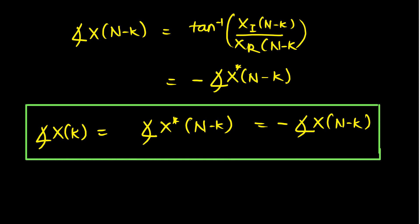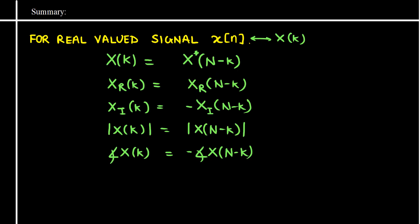So in this lecture we considered properties of the DFT for a real signal. We saw that X(k) equals X*((N-k)), the real part X_r(k) equals X_r((N-k)), the imaginary part X_i(k) equals minus X_i((N-k)), the magnitude of X(k) equals the magnitude of X((N-k)) which also equals the magnitude of X*((N-k)), and the angle of X(k) equals the negative of the angle of X((N-k)). Thank you.